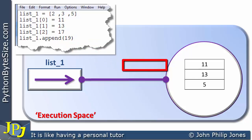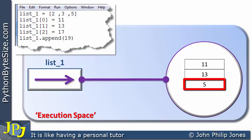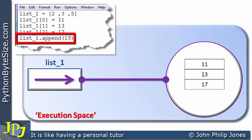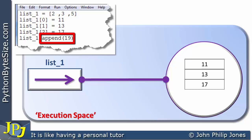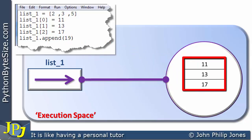This program statement will alter this particular element from its current value of 5 to 17. If you keep your eye on this element, you can see it changes from 5 to 17. The next program statement is a message to the object list_one that will invoke the append method. We can see that we're going to append 19 to the list, which currently has 11, 13, and 17, and 19 will be appended to the end.